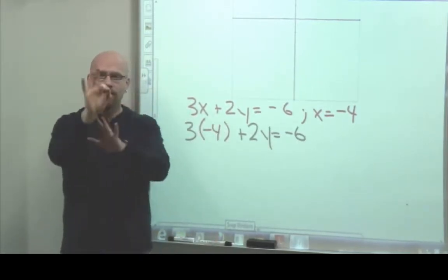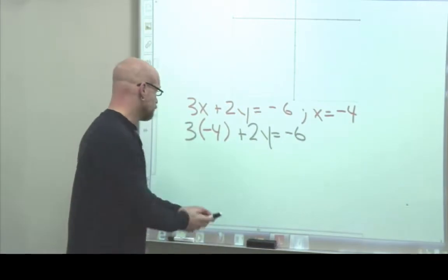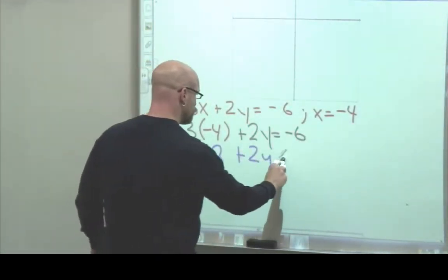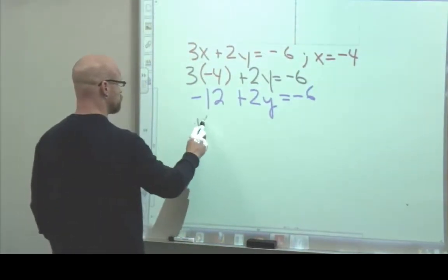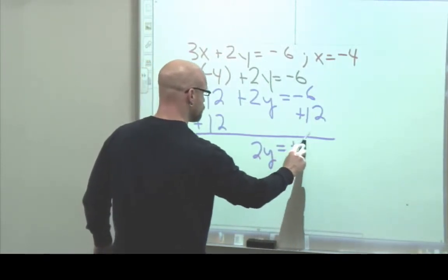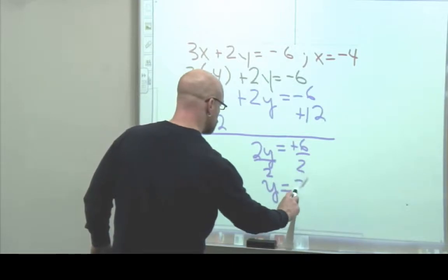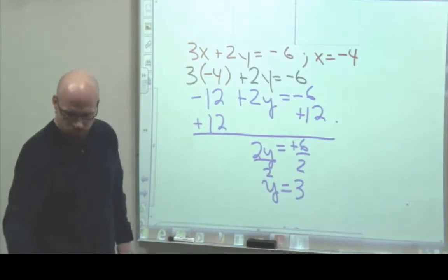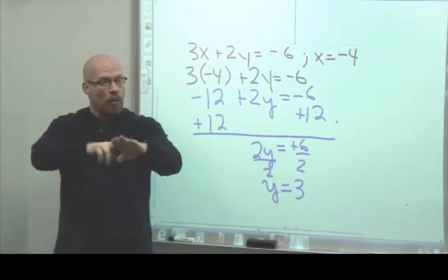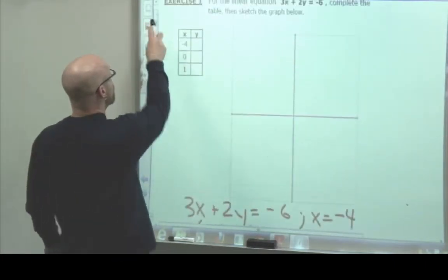We have replaced x with negative 4 and we're going to find the y value. This gives us negative 12 plus 2y equals negative 6. Solving for y, we get y equals 3. So x is negative 4 and y equals 3. Normally I would say we have to check this, but we're going to wait and see if some of our answers are not accurate.